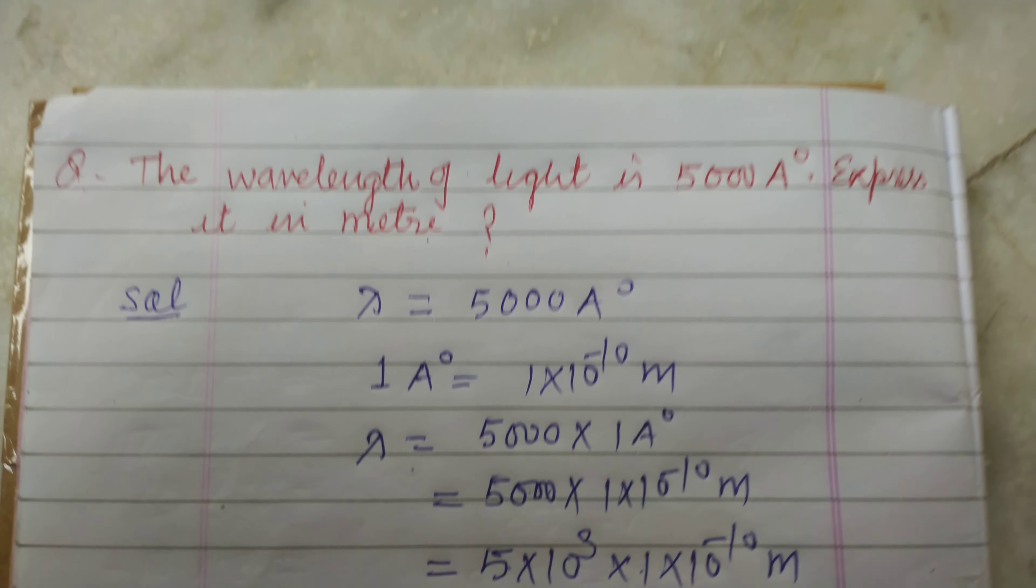And here are 50. So we write it as 5 into 10 to the power 3 into 1 into 10 to the power minus 10 meter.